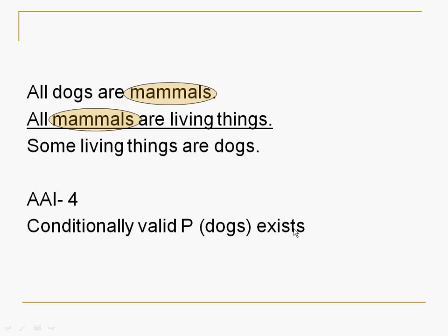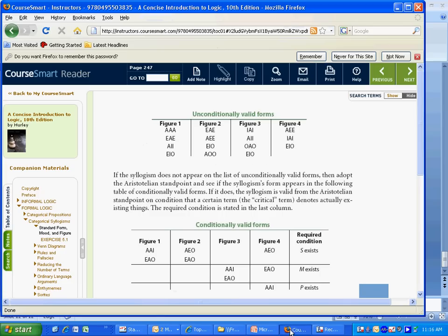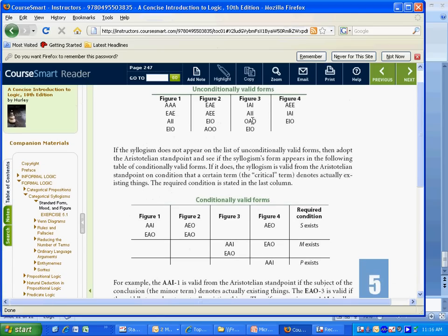Now, what am I doing here? Conditionally valid that P exists. Let's do this really quickly, if we can. And we'll go to the textbook again. And we look, A, A, I, figure four. If we look, it's not here. But if we go down here, under conditionally valid forms, figure four, A, A, I is here.